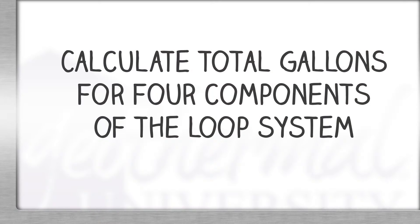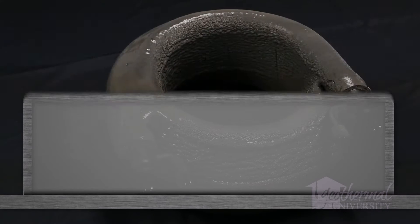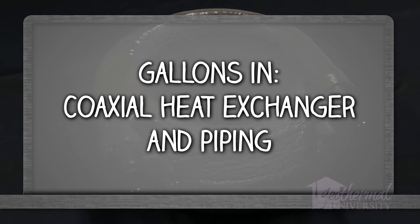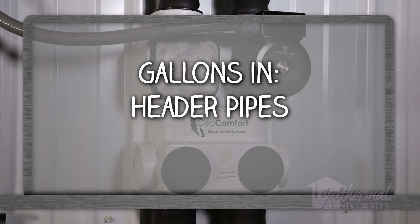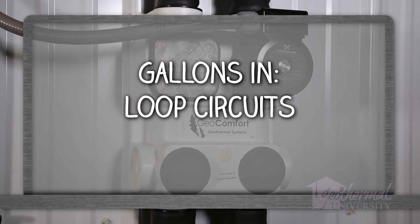We must calculate total gallons for four components in the loop system. They include gallons in the unit's coaxial heat exchanger and piping, gallons in the pump hose kit, gallons in the header pipe, gallons in the loop circuits.